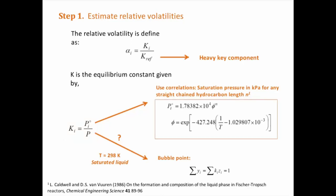To estimate the partial pressure of any straight-chain hydrocarbon of length N, the following correlation can be used. To estimate the pressure of the mixture, first we need to find the bubble point because the feed stream is a saturated liquid.